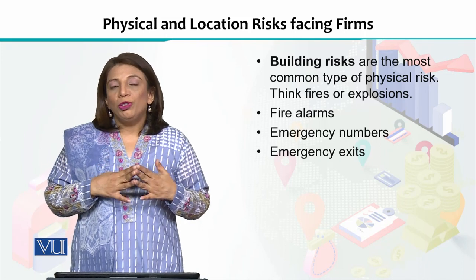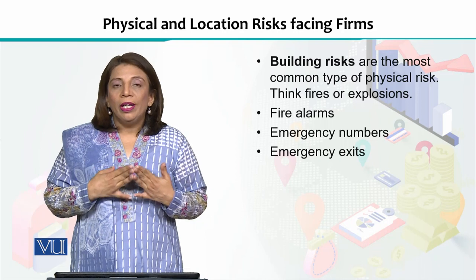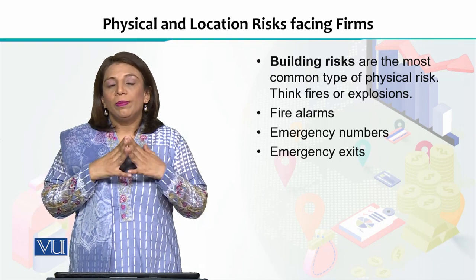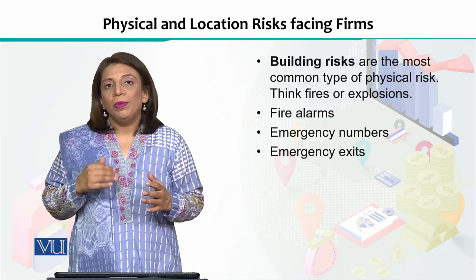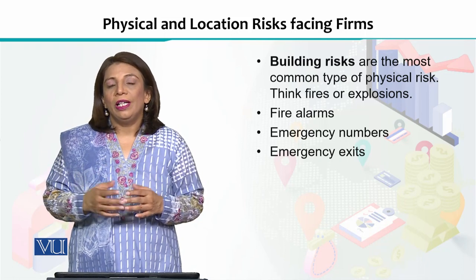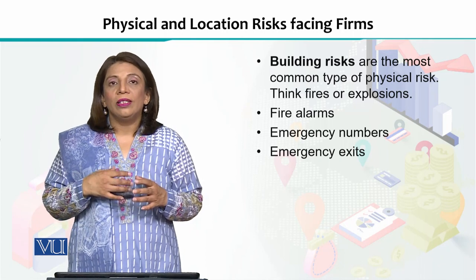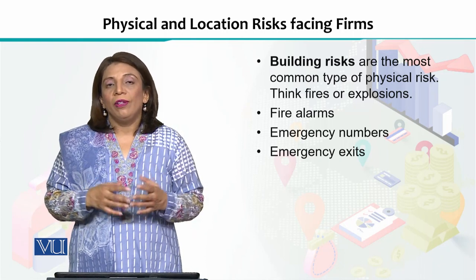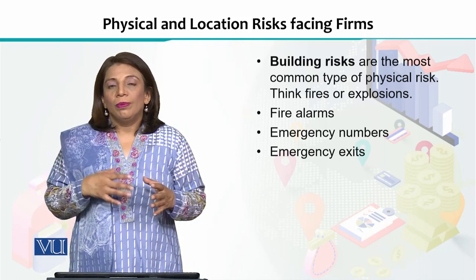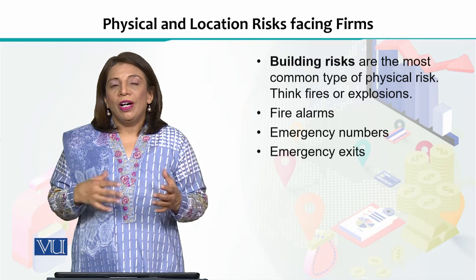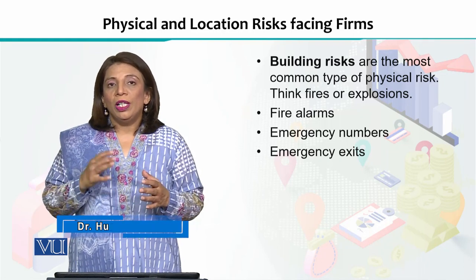The first risk under physical and location risks is building risk. Building risk means that within the building — within the physical structure where you are executing your business — there can be a problem. Such as there can be fire, or there can be a wall collapse or other physical damage. If that happens, you will need to reduce the risk of that particular thing.